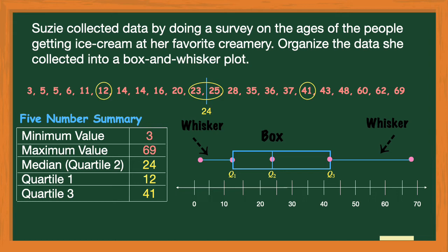Remember, a box and whisker plot takes the data you've collected and organizes it into four equal sections. In the box, between quartiles one and two, there's 25 percent of my data. Between quartile two and three, there's another 25 percent. And each whisker also represents 25 percent of my data, so all four sections together represent the entire survey.